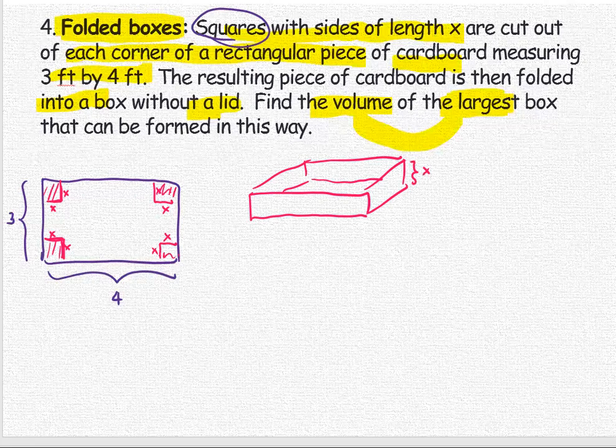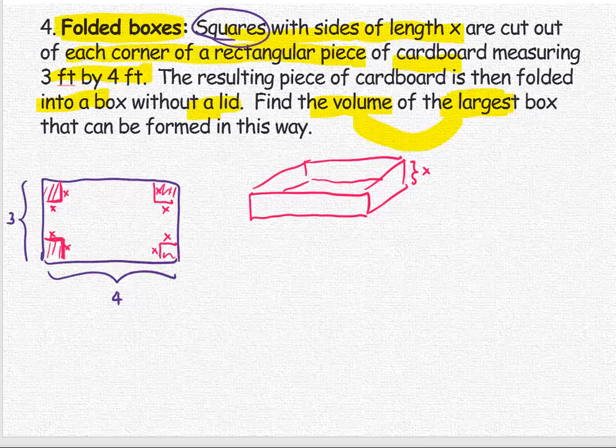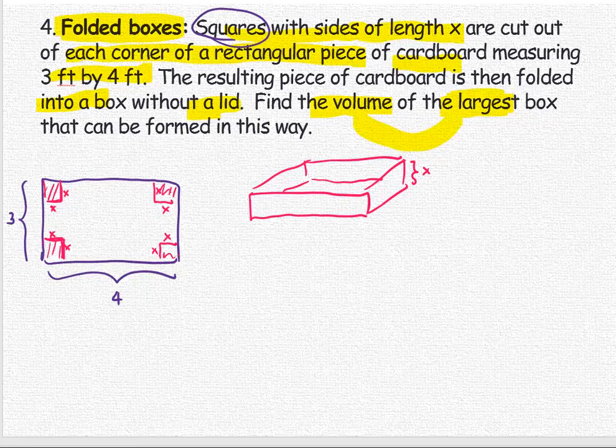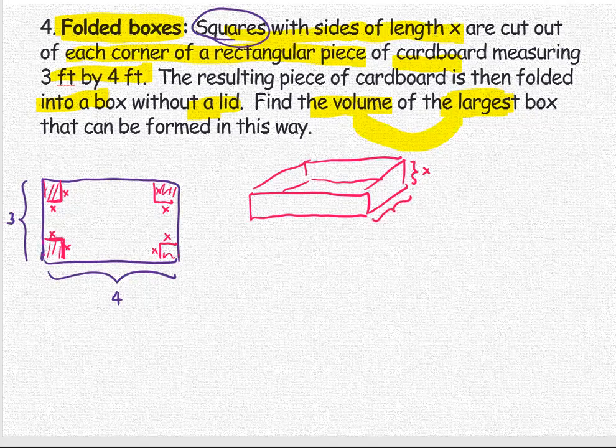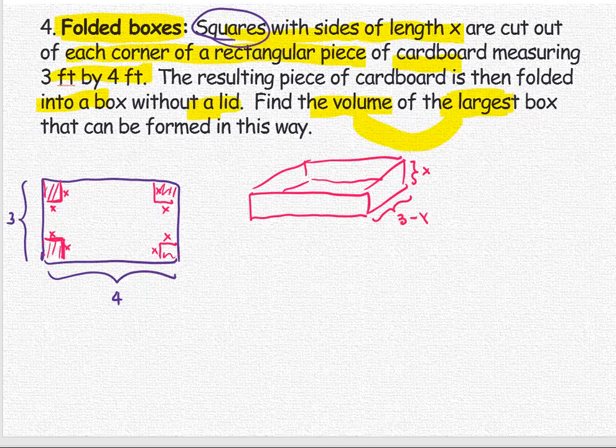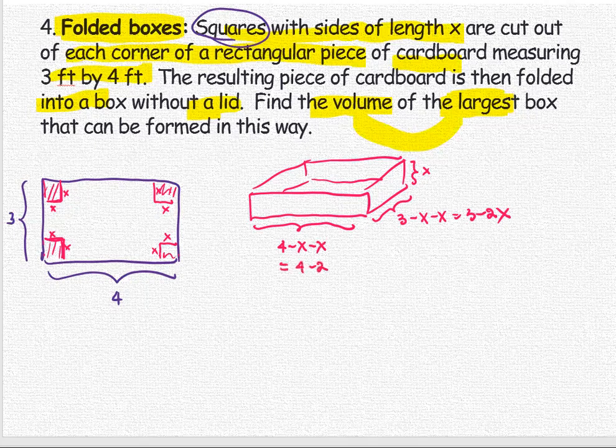The length and width or base dimensions of this box are based on the original dimensions but take away the two corners. If the original width is 3, cut out x on the left and x on the right, this side becomes 3 minus 2x. Similarly, the length is originally 4, so this dimension is 4 minus 2x.